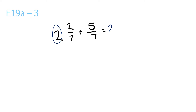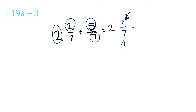2 plus nothing is 2. 2 plus 5 is 7. The 7 stays the same. Since the top and the bottom are both the same, it equals 1. Then you get the 2 and the 1, and you plus them. So your answer is 3.